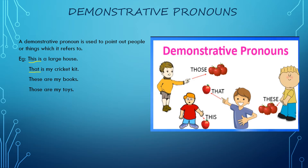Next comes: these are my books. You are talking about books — it is the plural form of the noun. So we have used these because the books are kept nearby. Now: those are my toys. Again we are talking about toys, which are far away, so we use those. This, that, these and those are known as demonstrative pronouns because they are used to point out at some people or thing.